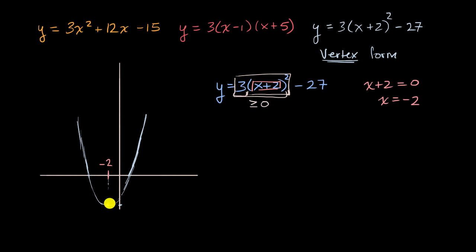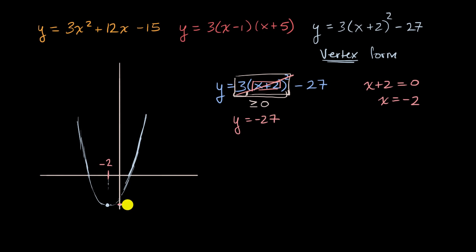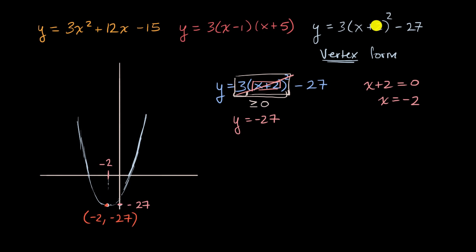So the x-coordinate of the vertex is negative two. What's the y-coordinate? Well, when x is equal to negative two, this whole squared term is zero and y is equal to negative 27. So the coordinates of the vertex are negative two comma negative 27, and you were able to pick that out just by looking at the quadratic in vertex form.